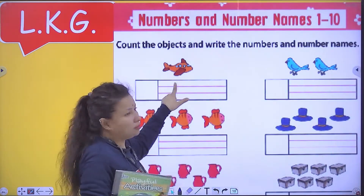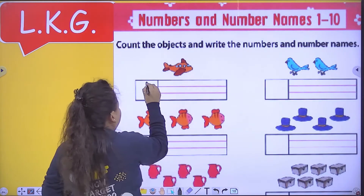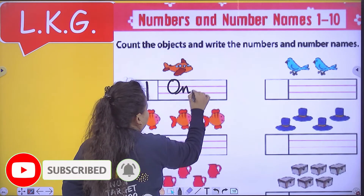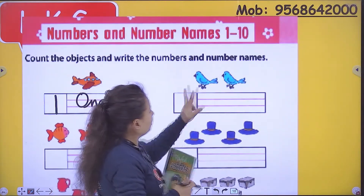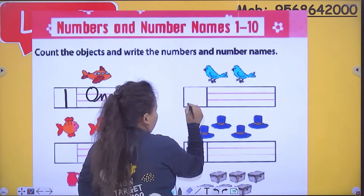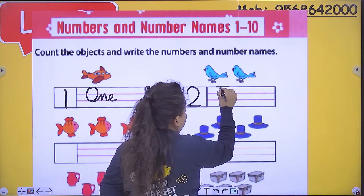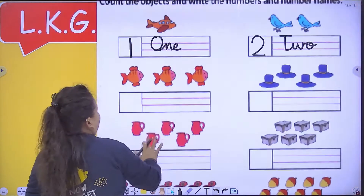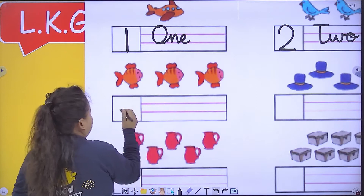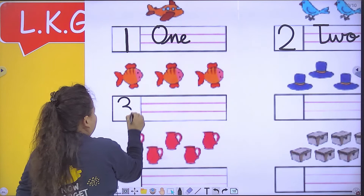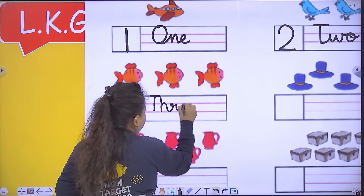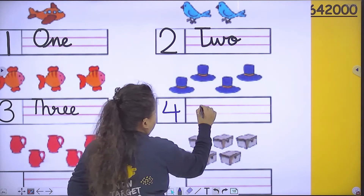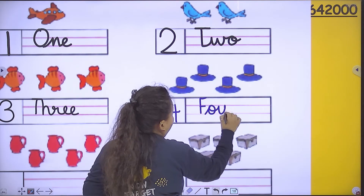Now how many objects are here? One. So in the box we have to write one, and uske baad hume number name likhenge — O N E, one. Now here are two objects, number two. So two, T W O, two. Next is three — T H R double E, three. Four. There are four hats — F O U R, four.